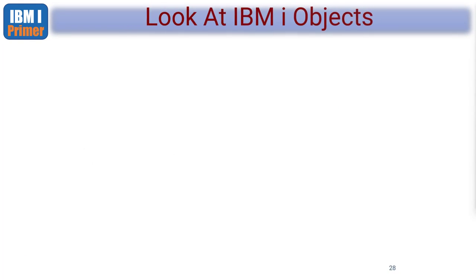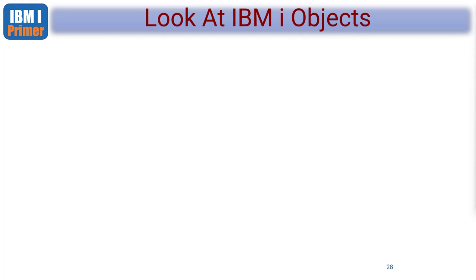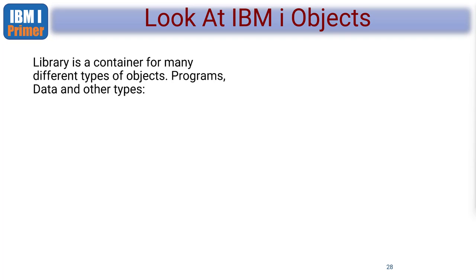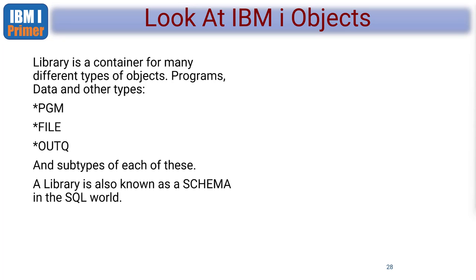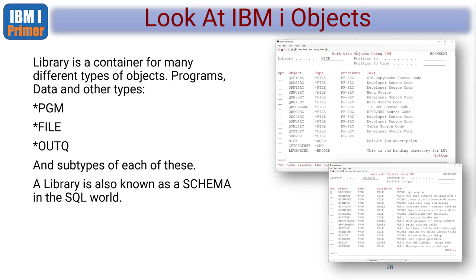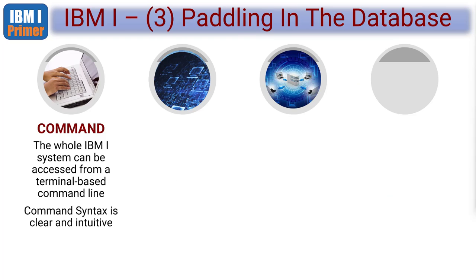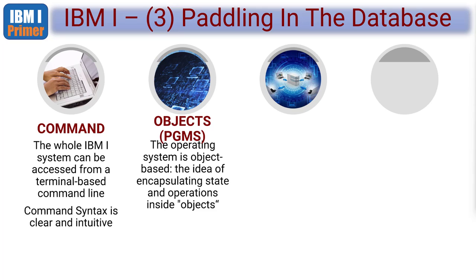A library is a container for many different types of objects: programs, data, and other types. We have files, out-queues, and subtypes for each. To recap: the whole IBM i system can be accessed from the command line - it's terminal based and the syntax is clear and intuitive. Objects are programs and files; the operating system is object-based, encapsulating state and operations inside objects.